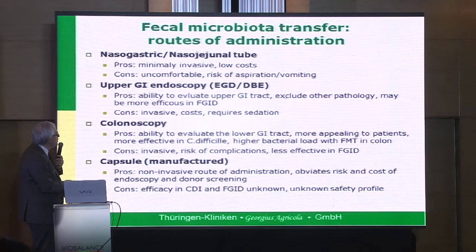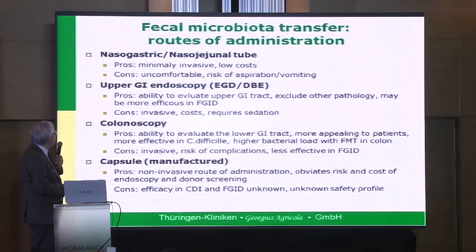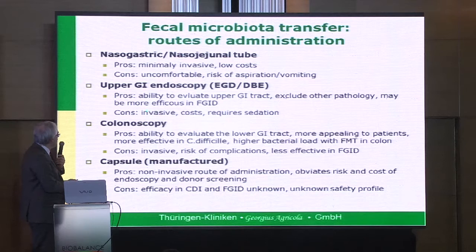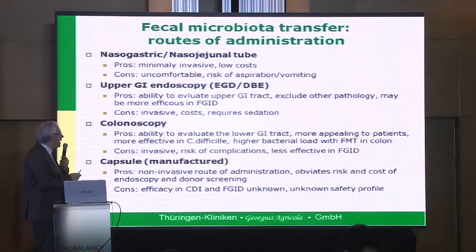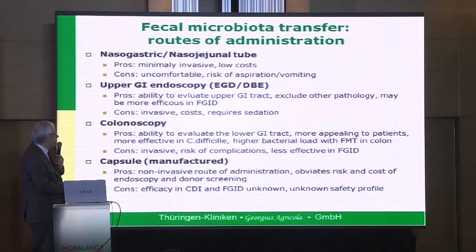You can use upper GI endoscopy, but you need to perform an esophagogastroduodenoscopy. Or we use a double balloon enteroscopy, going one to two meters inside the small intestine — it's invasive, but some studies indicate it's more efficient in functional bowel disorders. The colonoscopy is very good because you can evaluate the lower GI tract before transplantation, exclude other diseases, it's more effective in Clostridium difficile, and allows a higher bacterial load than FMT in the small intestine.